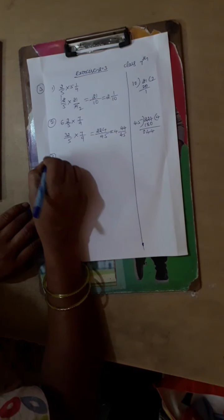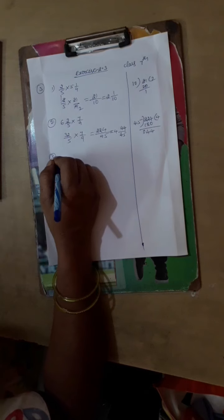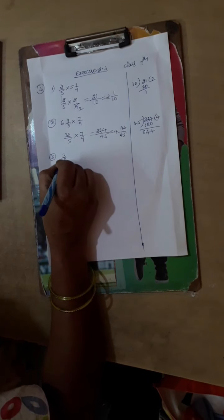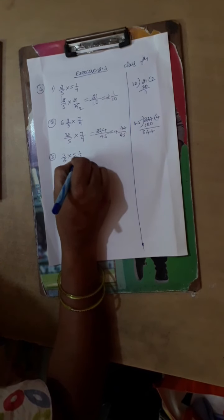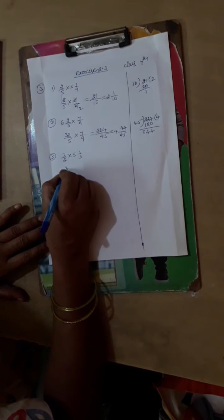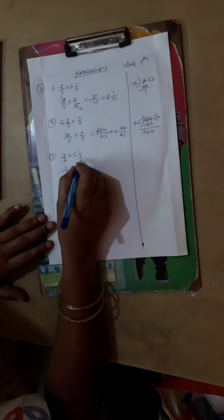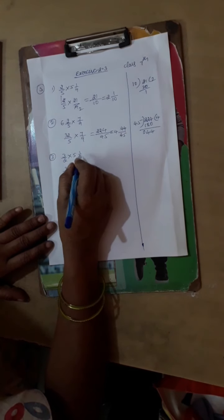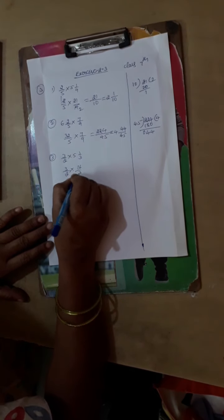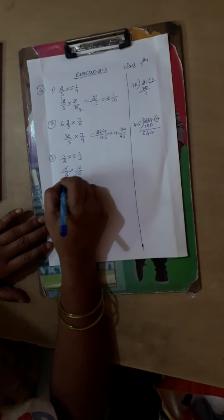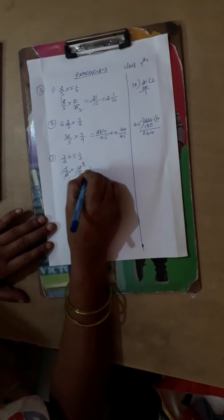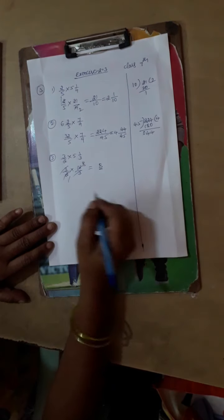Then problem number 3: 3 by 2 into 5 1 by 3. So let us multiply: 3 by 2 into 5 times 3 is 15, 15 plus 1 is 16 by 3. So let us cancel this 3 with this 3, then 2 times 1 is 2, 2 times 8, which is equal to 8.